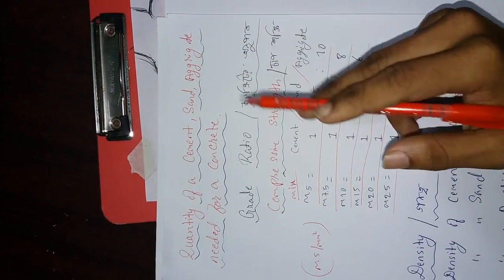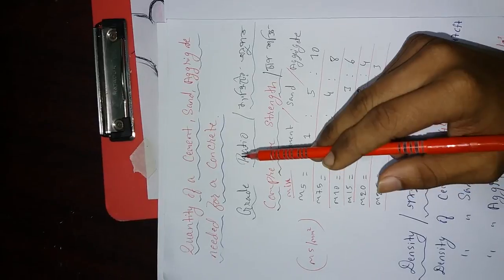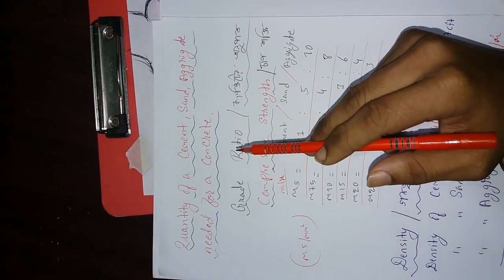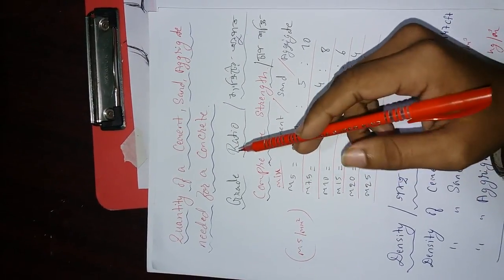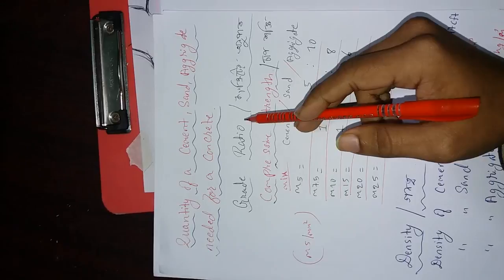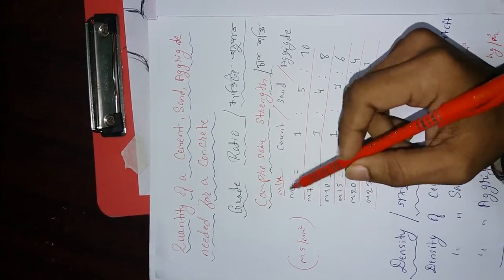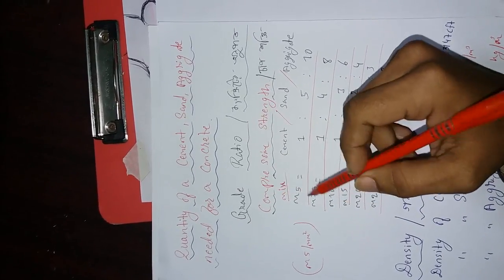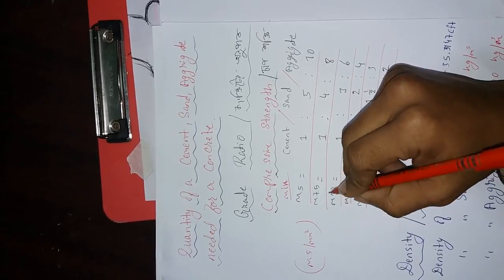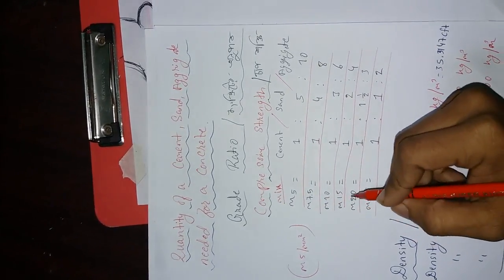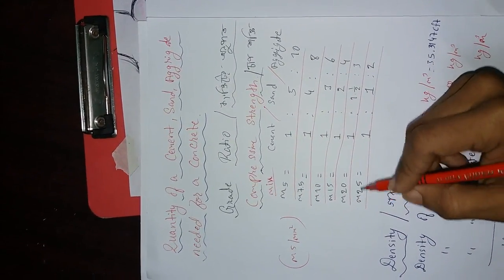We know concrete and cement are good. We know that concrete is good. This is the grid. The grid is M5, M7.5, M10, M15, M20, M25.